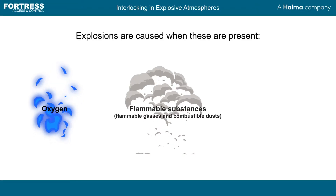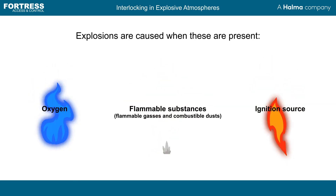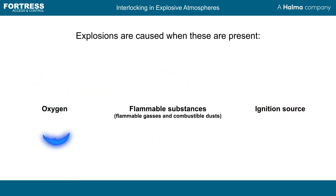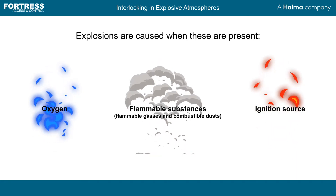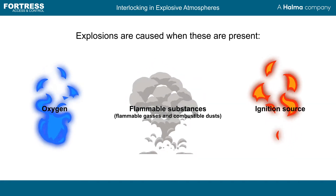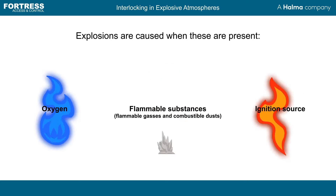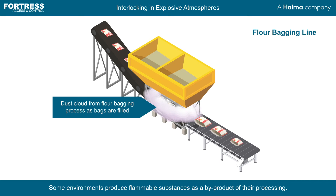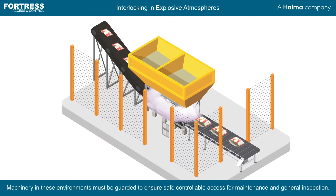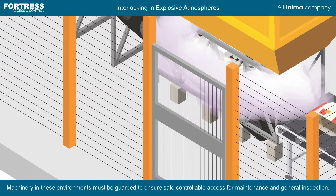Explosions occur when three contributing elements are present within an environment: oxygen, which is found typically within the air; flammable gas or combustible dust in ignitable quantities, produced as a by-product of processes; and an ignition source. The element we will take a closer look at in today's video is machinery operating in these environments, which requires controlled access for both maintenance and general inspection to ensure productivity.